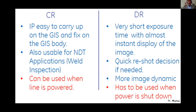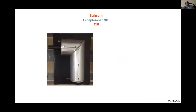The key difference between CR and DR: CR is easy to carry and can be used for different fixed geometries and NDT weld inspection, and it can be used when the line is powered. DR offers very short exposure times — where CR might require one minute, DR requires only five or ten seconds, saving significant time. DR allows quick decisions because you get immediate results and quick interpretation on-screen. DR is especially useful for shutdown applications when power is shut down.